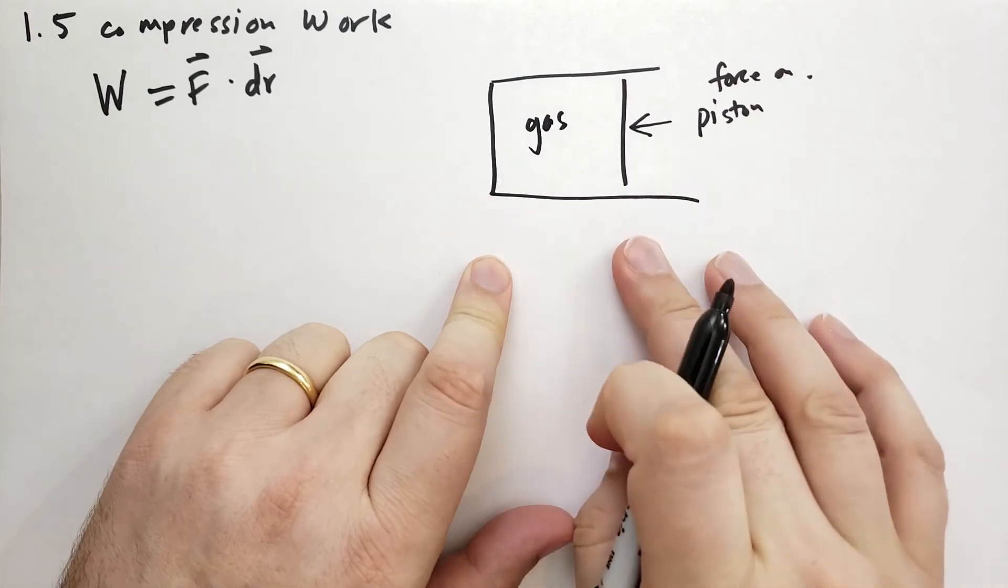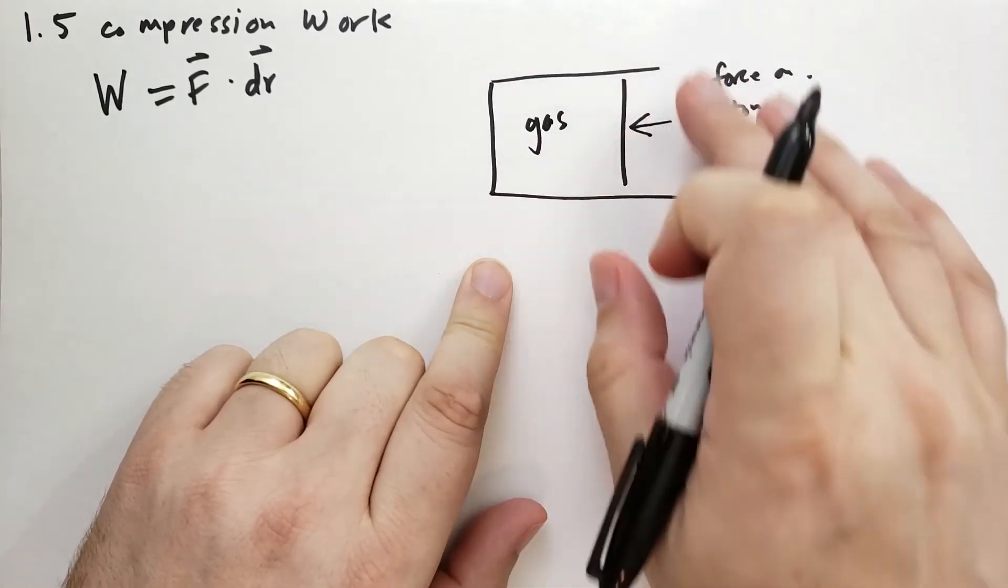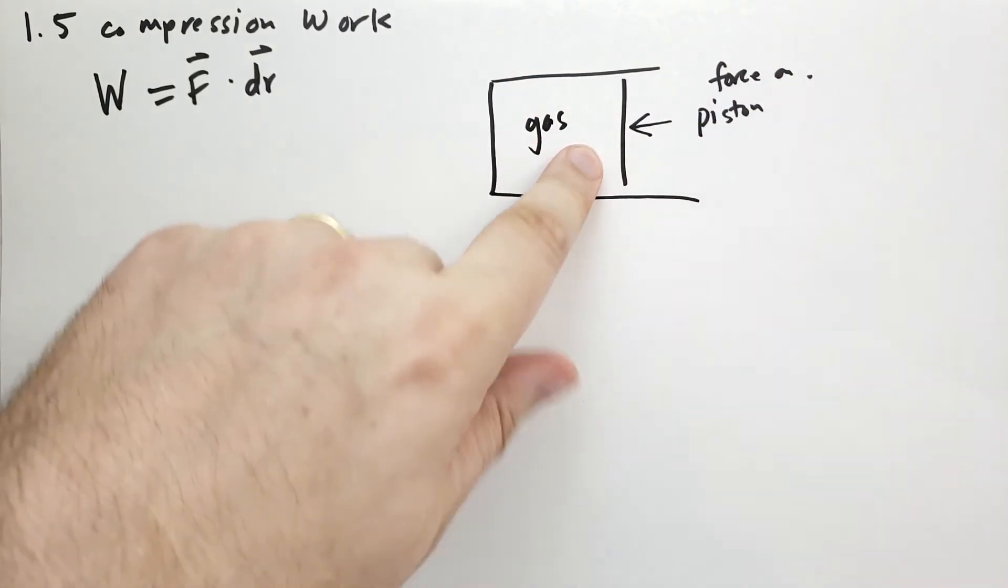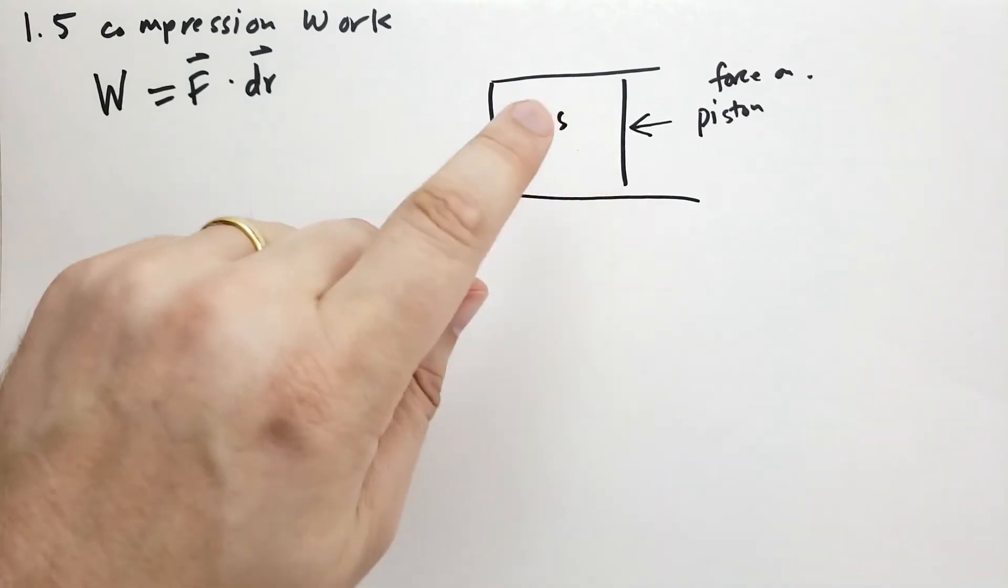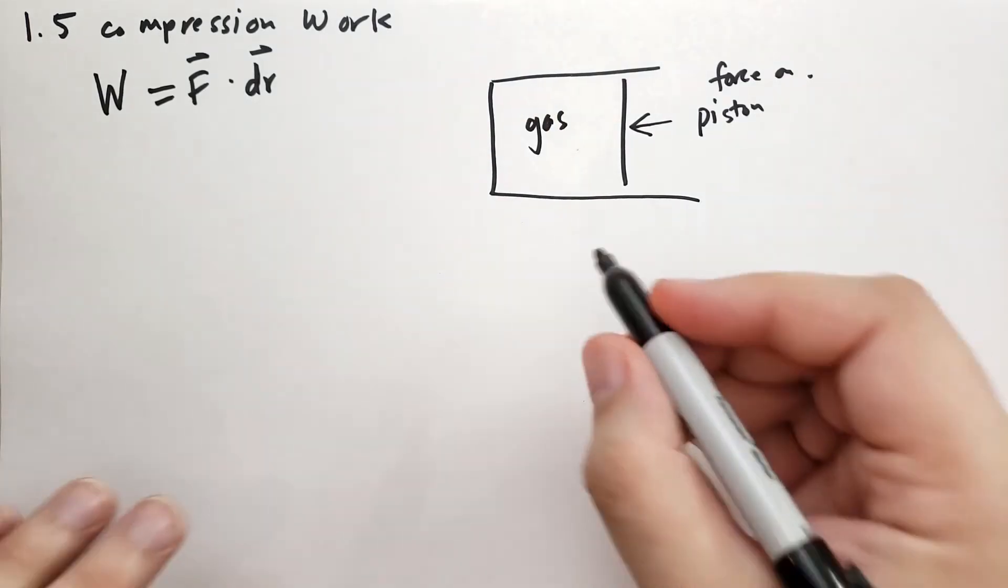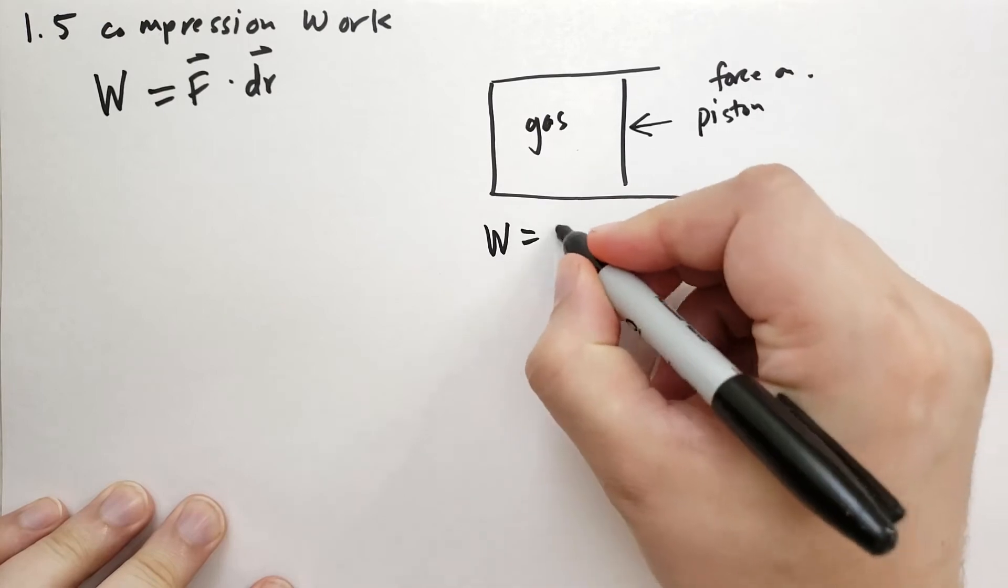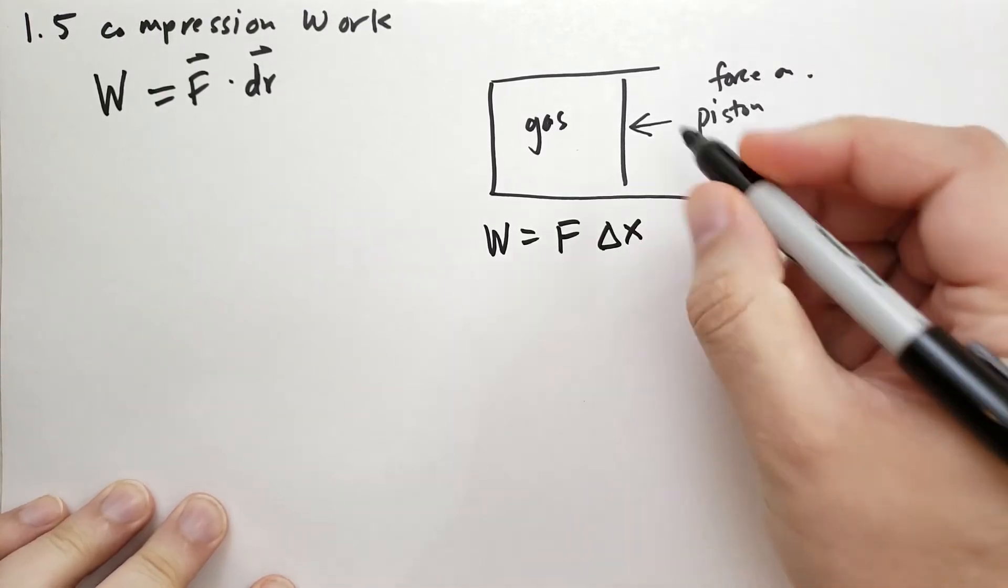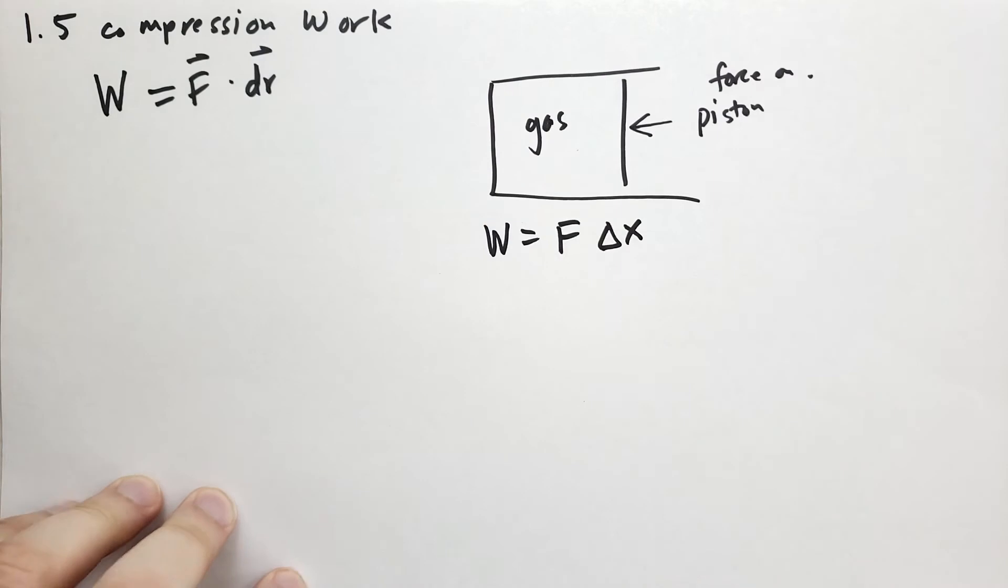Now, if we can exclude all of the friction and everything else that might be happening besides the work done on the gas, then we can find the work done on the gas and we're going to find that the work done on the gas is equal to the force on the piston times the change in the position of that piston.